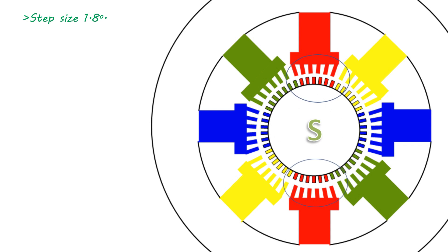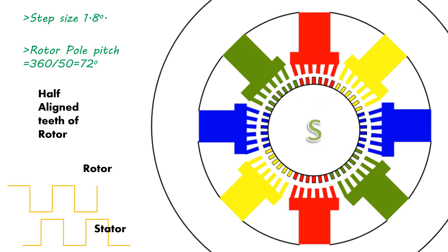The rotor has total 50 teeth in 360 degree space, so rotor pole width will be 360 divided by 50 which turns out to be 7.2 degrees. It means that half aligned teeth are actually shifted by an angle of 1.8 degrees, and unaligned teeth are shifted 3.6 degrees with respect to fully aligned teeth.